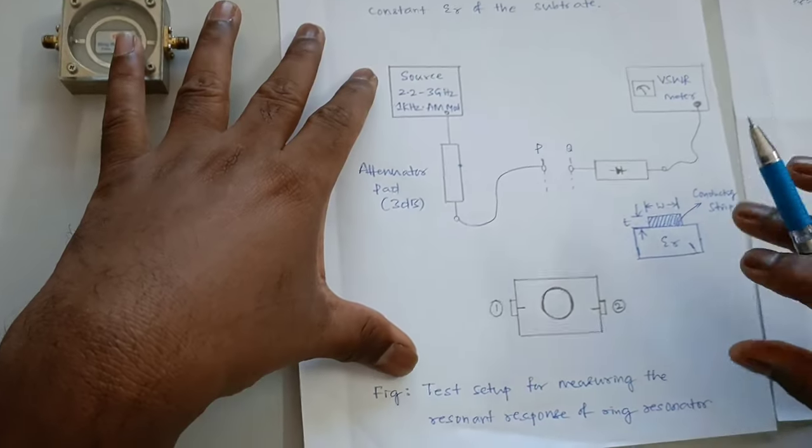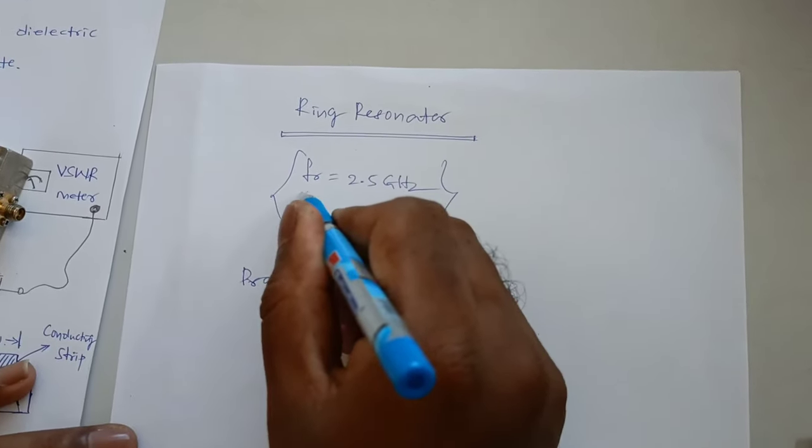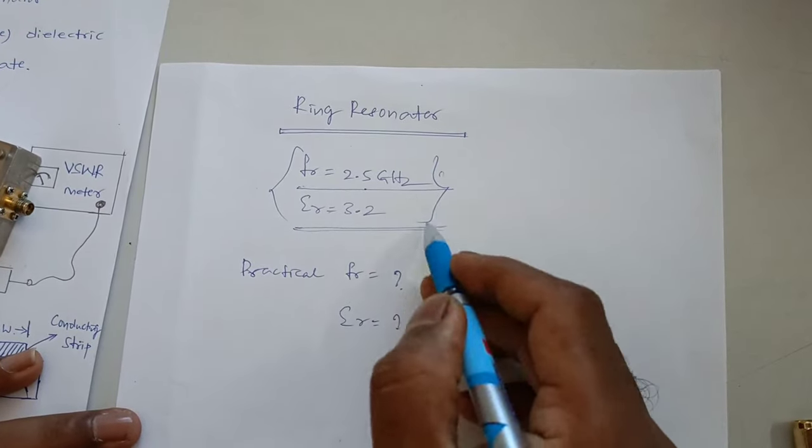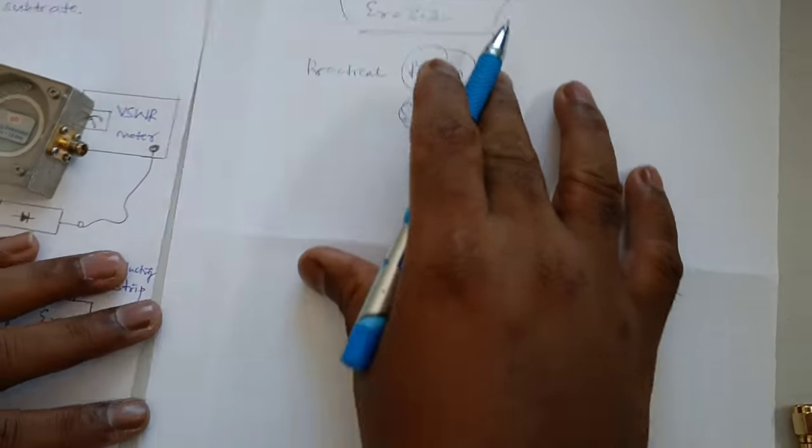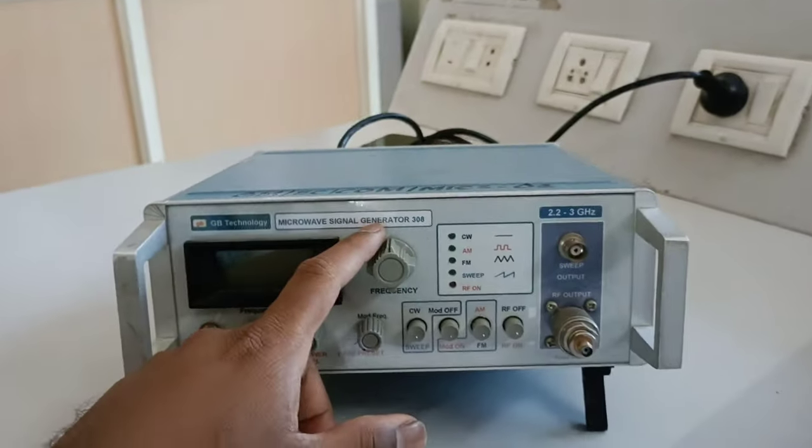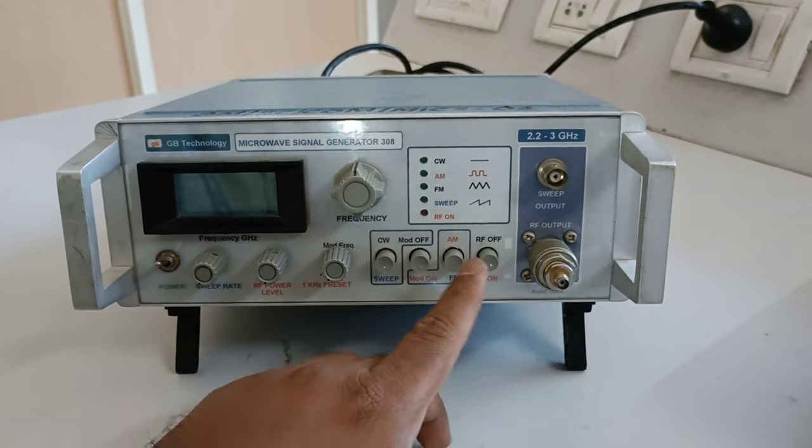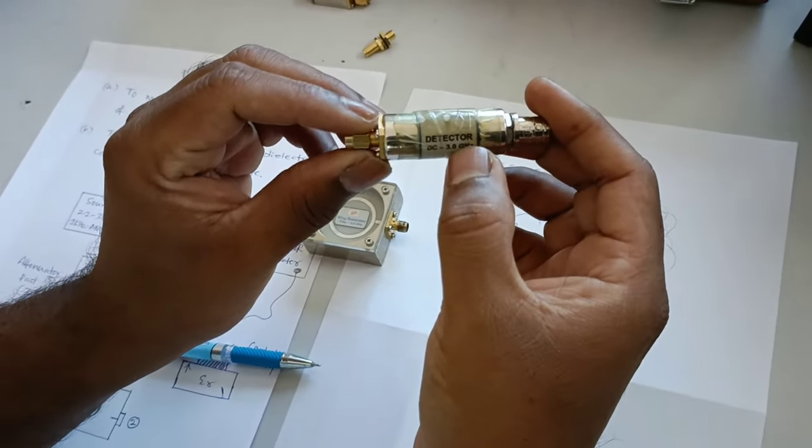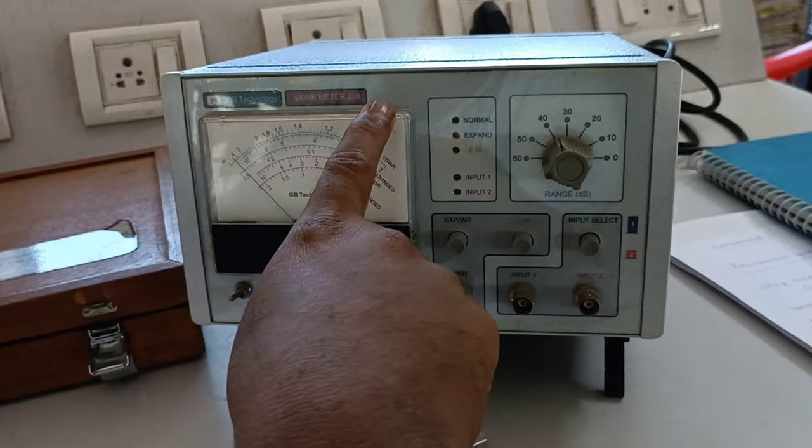As I told in the beginning, the ring resonator already designed by the manufacturer. It is given to resonate at 2.5 giga. And epsilon R, it is 3.2. These two are theoretical values. What they have given. So practically, we have to find out FR and epsilon R. To do this experiment, we need a source that is called microwave signal generator. It has got inbuilt modulation facility. That is AM square modulation, microwave modulation. And for the detection purpose, what we are using is coaxial detector.